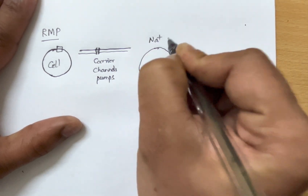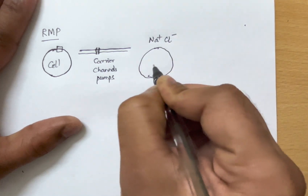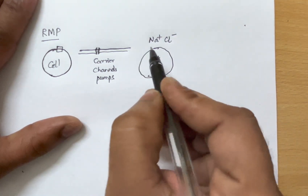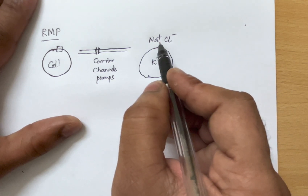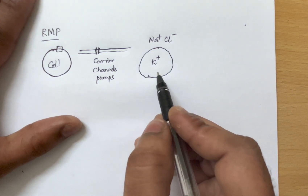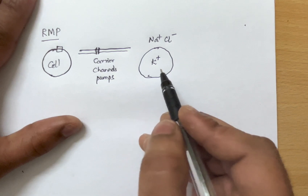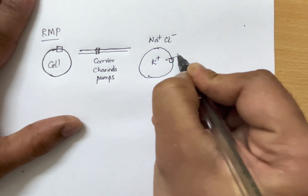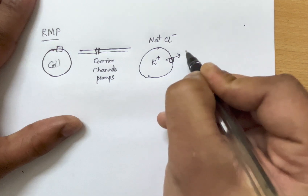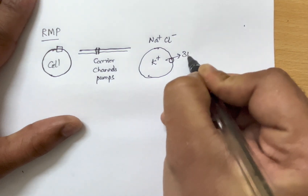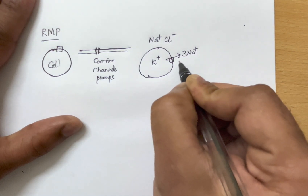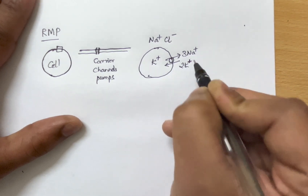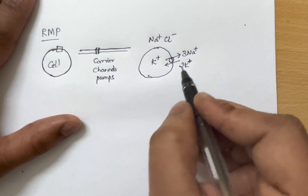There is also an uneven distribution of electrolytes across the cell, with more sodium outside the cell, more chloride outside the cell, and more potassium within the cell. The concentration of sodium is more outside and potassium is more inside. There is a sodium-potassium ATPase pump functioning all the time.